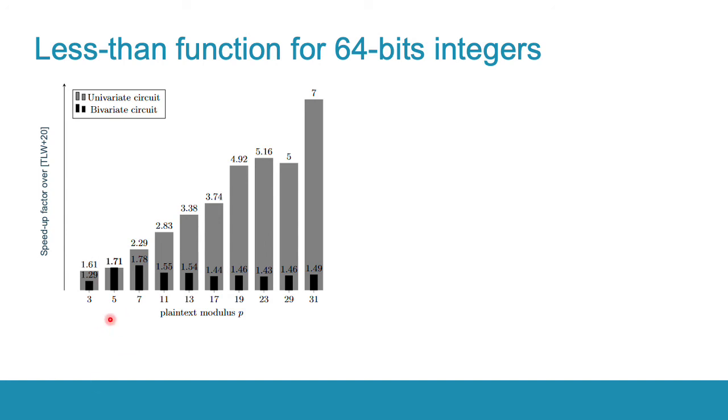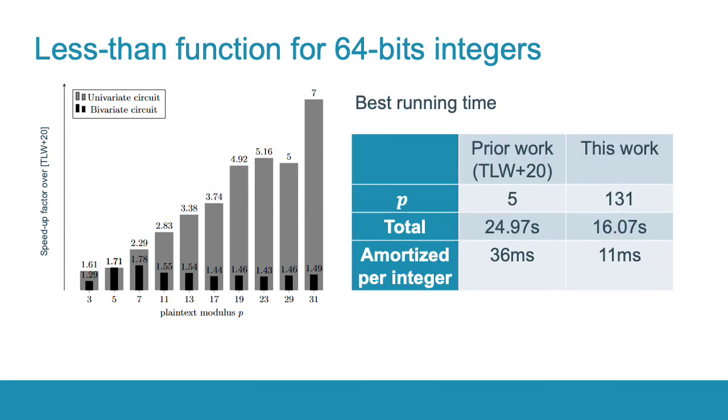It's easy to see that the speed-up factor of our bivariate circuit is almost constant and fluctuates around 1.5 as predicted by theory. The speed-up factors of the univariate circuit is increasing with the modulus p. The best running time that we could achieve is with the plaintext modulus 131. The total time is around 16 seconds, but it is possible to encode several integers into one ciphertext and process them in parallel such that the amortized running time per integer is reduced.